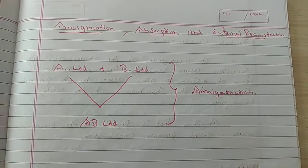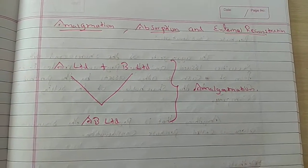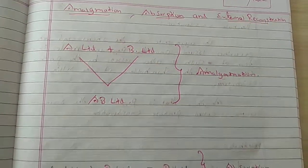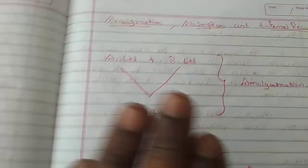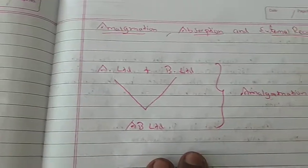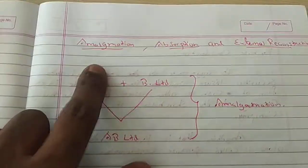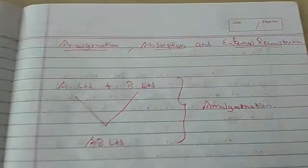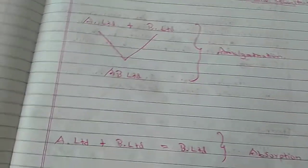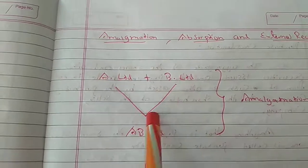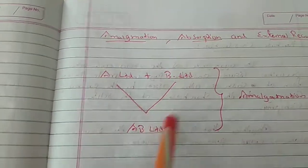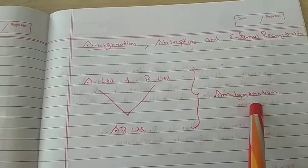Here is the Amalgamation, Absorption and External Reconstruction. In these 3 cases, it is a very simple chapter. Amalgamation means when two companies are joined together to form a new company, it is called Amalgamation.